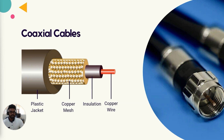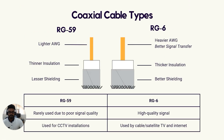For example, the insulation layer could be foam or even air, and the cable could have two or more shield layers. The way a coaxial cable is constructed affects its transmission capabilities, resulting in coaxial cables having different types or grades.